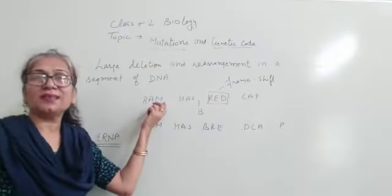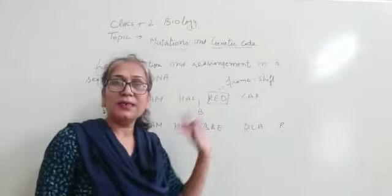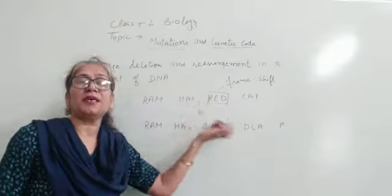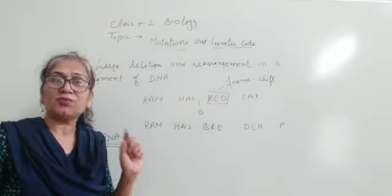Now, what does genetic code do with them? Let's see. I have a simple sentence. Ram has red cap. Now, in the last video, we have 3-3 set nucleotides, 3-3 get triplets.